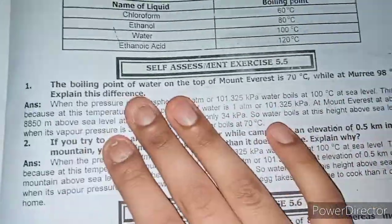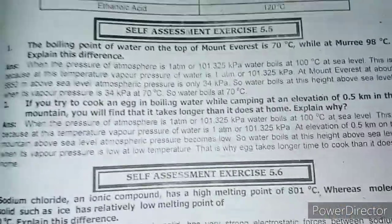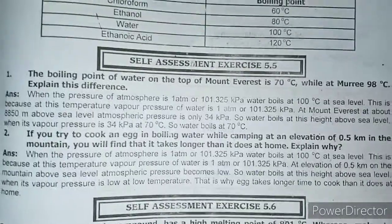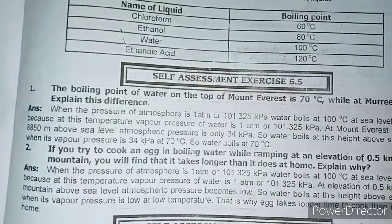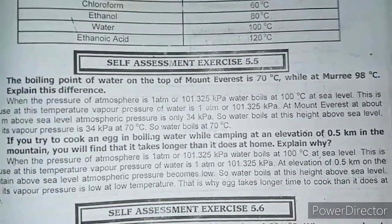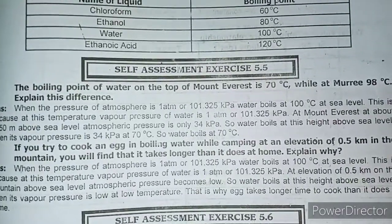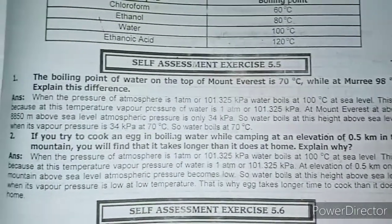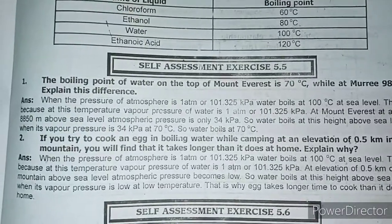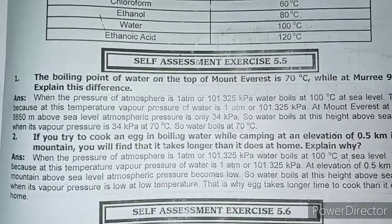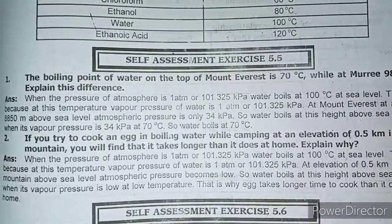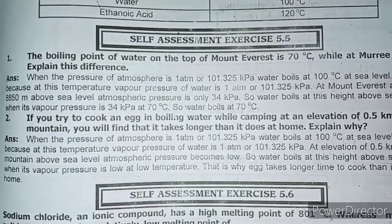Self-assessment 5.5 का आप देख सकते हैं: The boiling point of water at the top of a mountain is 70°C, while at a lower altitude it is 90°C — explain this difference. जब atmospheric pressure 101 kPa से ज़्यादा हो, boiling temperature कम होती है। At Mount Everest, about 8850m above sea level, atmospheric pressure is only 34 kPa — तो वहाँ atmospheric pressure कम है, तो boiling point of water भी कम होता है।